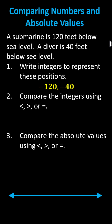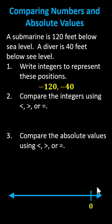Next, we're asked to compare the integers using less than, greater than, or equals. To do this, let's plot these two values on the number line. Because both values are negative, we know they're less than zero, or to the left of zero. Let's begin by labeling zero on the right side of the number line, and let's count to the left in multiples of negative 40.